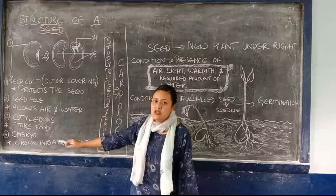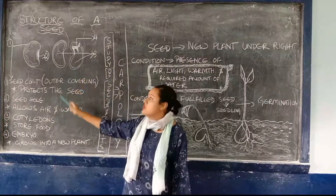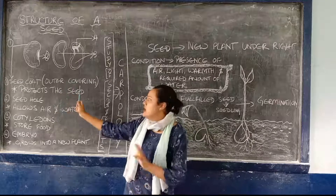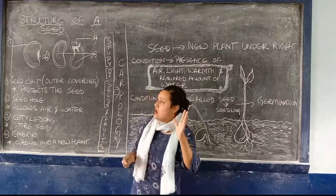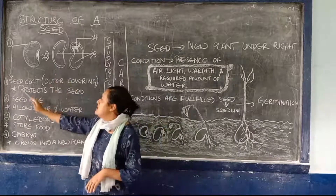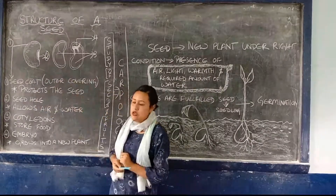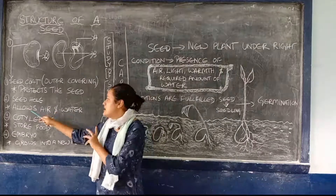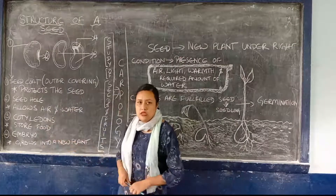Now, your work is to write down those structures of the seed — the different parts of the seed — and you are going to write their functions. Number one, you just write number one: it is the seed coat. On the next side, you are going to write the function. Number two is the seed hole — write its function. Then number three, number four, same way you are going to write it.